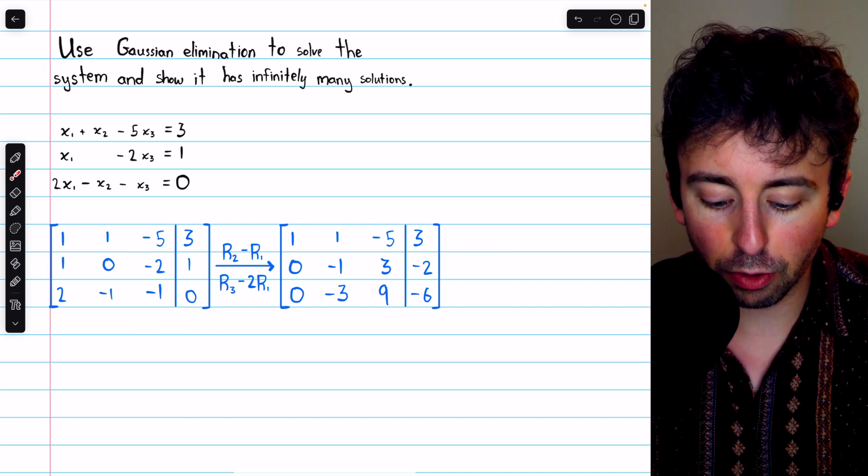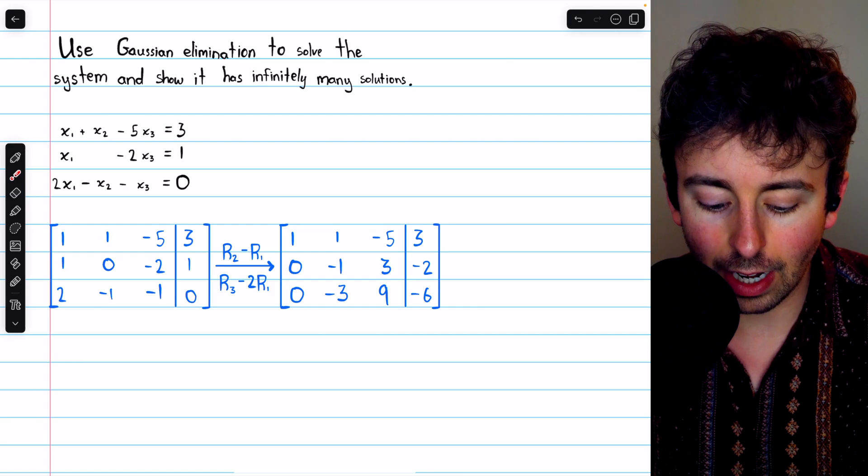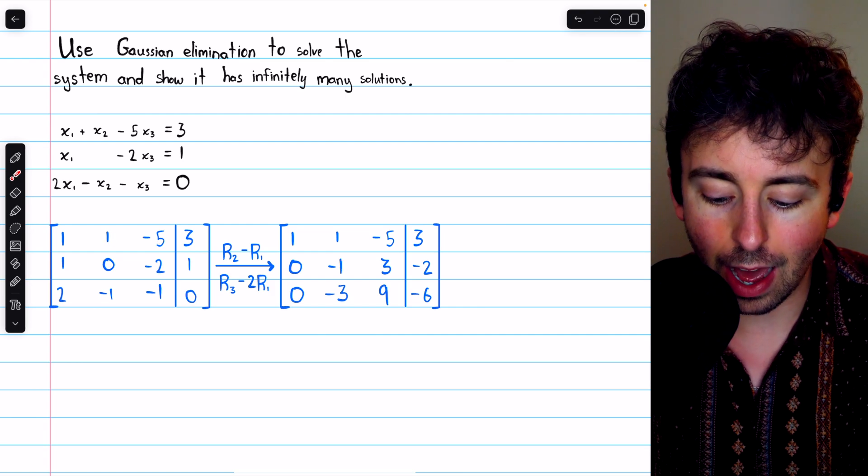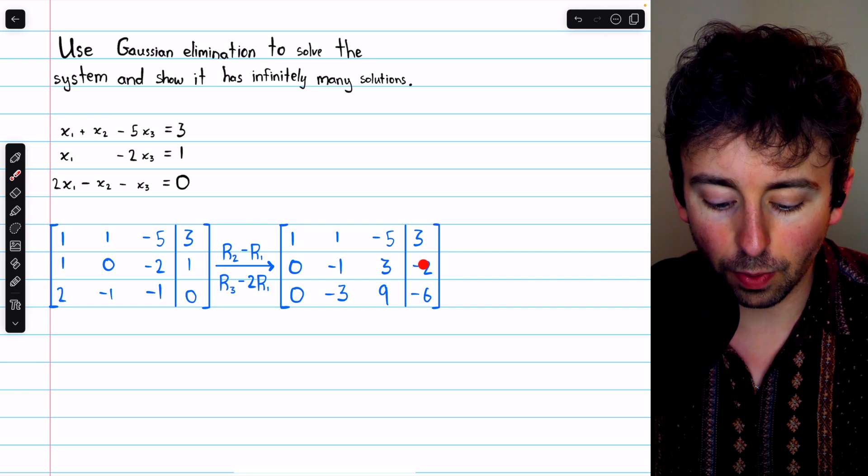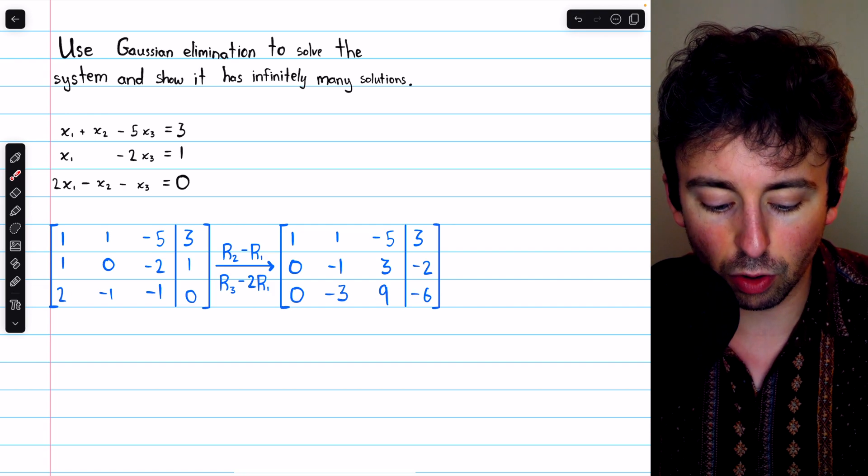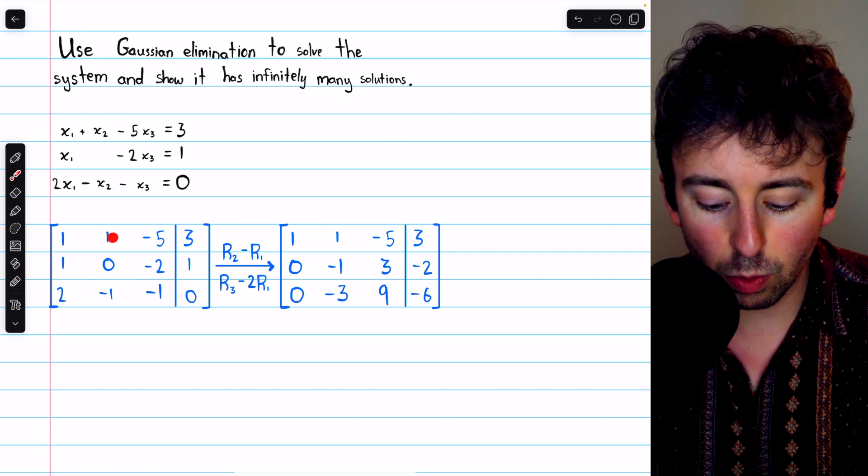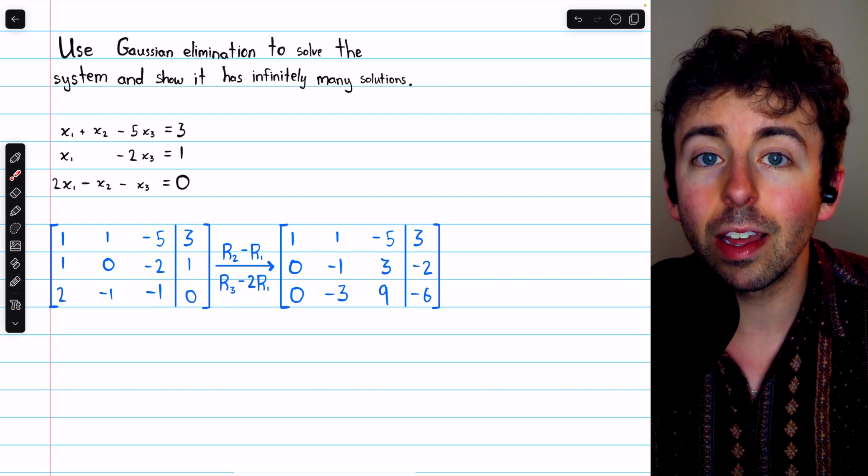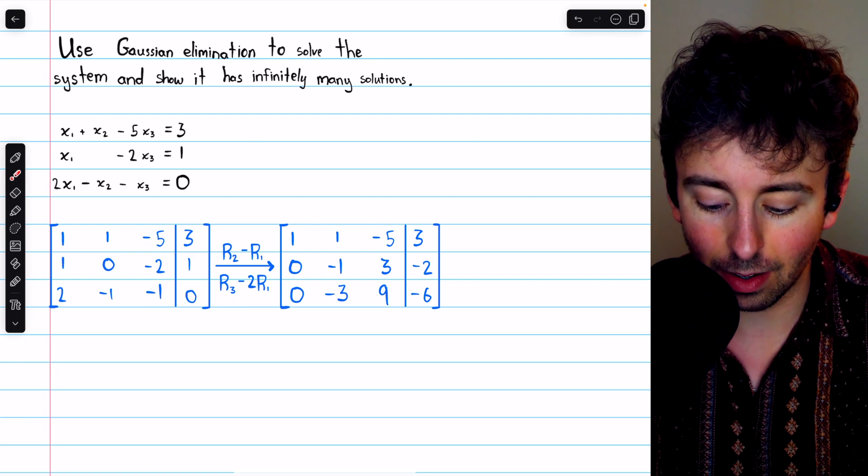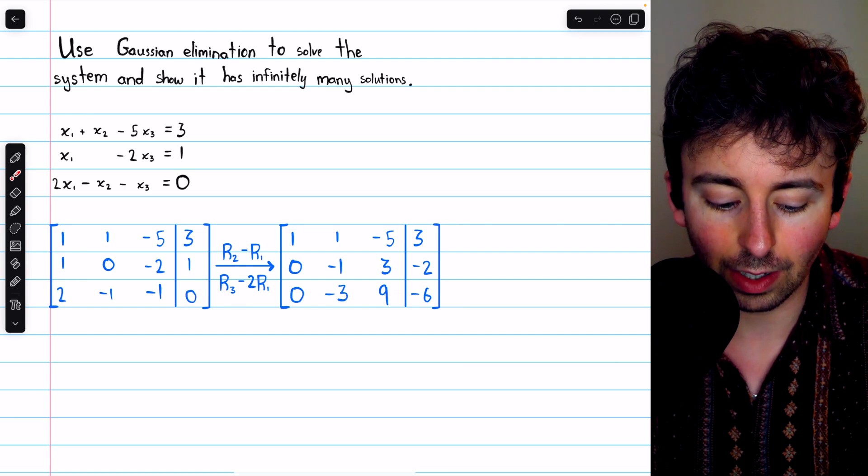Of course, we have zeros below that leading one. Zero minus one gives us negative one, negative two minus negative five gives us positive three, and one minus three gives us negative two. In row three, we have two minus two times one, which gives us zero, negative one minus two times one gives us negative three, negative one minus two times negative five is negative one plus ten, so positive nine, and zero minus two times three gives us negative six.